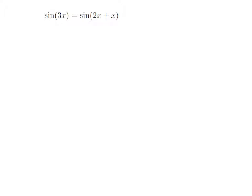As 3x is equal to 2x plus x, sine of 3x is equal to sine of 2x plus x. The identity for sine of a plus b is: sine of a plus b is equal to sine of a into cosine of b plus sine of b into cosine of a.